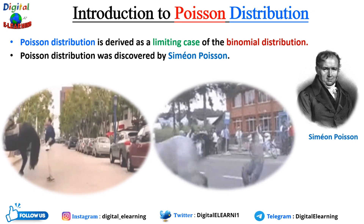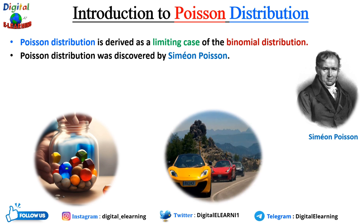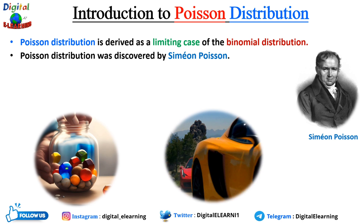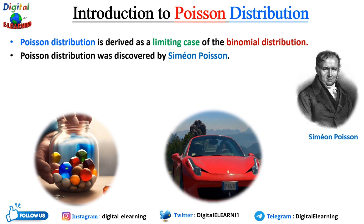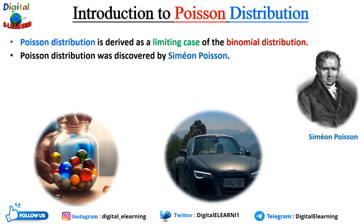Imagine you have a jar filled with colored marbles and you want to know the probability of taking out a specific number of marbles per minute if you take out 5 marbles every minute. Similarly, if you are interested in the number of cars passing through a road in a given time, Poisson distribution can help predict the probabilities of different numbers of cars passing based on the average rate of car arrivals.